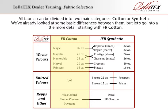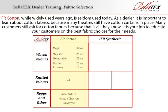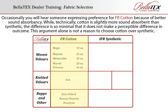Flame resistant cotton is available in a wide range of colors and has been chemically treated with fire retardant. If it gets wet, it must be dry cleaned and then retreated for fire retardancy. FR cotton, while widely used years ago, is seldom used today. As a dealer, it is important to learn about cotton fabrics because many theaters still have cotton curtains in place, and many customers still ask for cotton because that is all they know — it is your job to educate your customers. Occasionally someone may express a preference for FR cotton because of better sound absorbency, but while technically cotton is slightly more sound absorbent than synthetic, the difference is so minimal it does not make a perceptible difference in outcome. This argument alone is not a reason to choose cotton over synthetic.